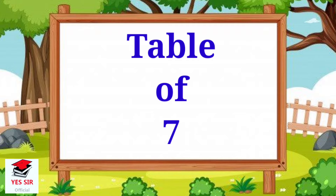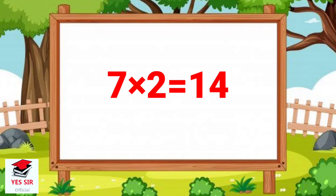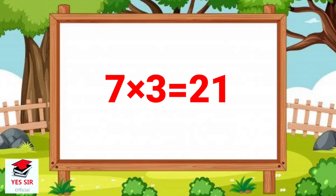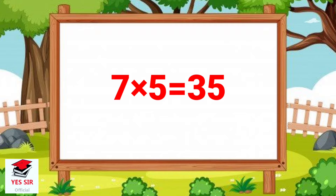Table of 7. 7 and 1 is equal to 7. 7 and 2 is equal to 14. 7 and 3 is equal to 21. 7 and 4 is equal to 28. 7 and 5 is equal to 35.